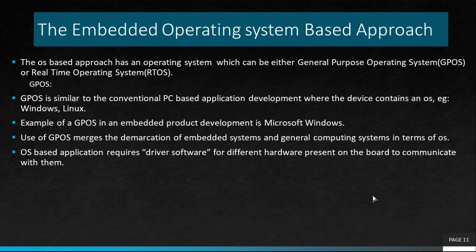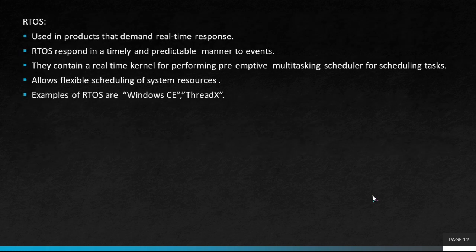The GPOS is similar to conventional PC-based application development where the device contains an operating system — for example, Windows or Linux, which we use day to day, are considered embedded OS based approaches. An example of an embedded product using this is Microsoft Windows, which merges the boundary between embedded systems and general computing. An OS based application requires driver software to communicate with the different hardware present in the firmware.